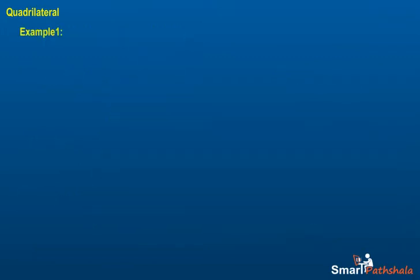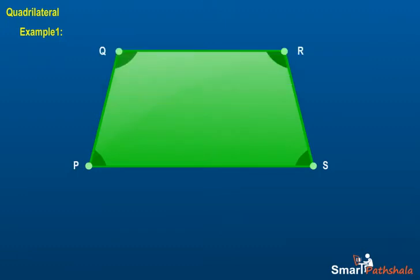Example 1: Draw a rough sketch of a quadrilateral PQRS. State: A. Two pairs of opposite sides, B. Two pairs of opposite angles, C. Two pairs of adjacent sides, D. Two pairs of adjacent angles.